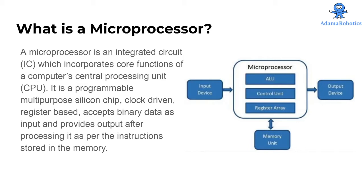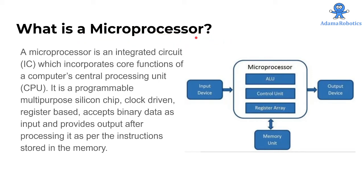Basically, what is a microprocessor in simple terms? Microprocessor — in the name, micro means small and processor means something that processes. So what does it process? It processes information. It processes data and gives out meaningful information.